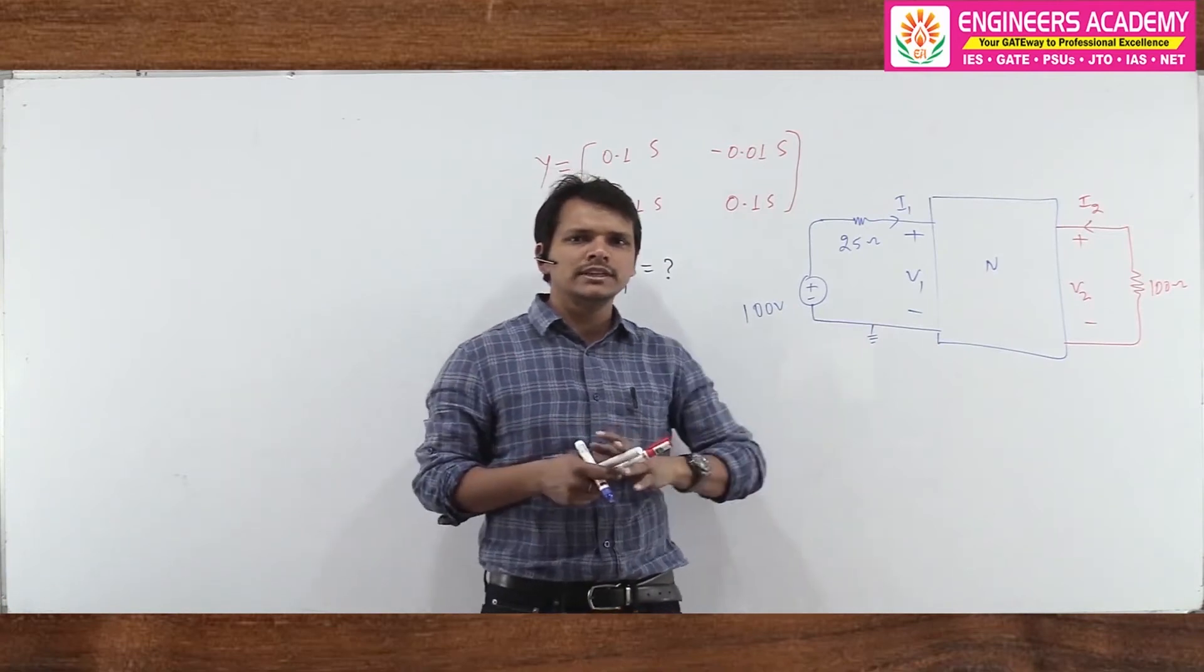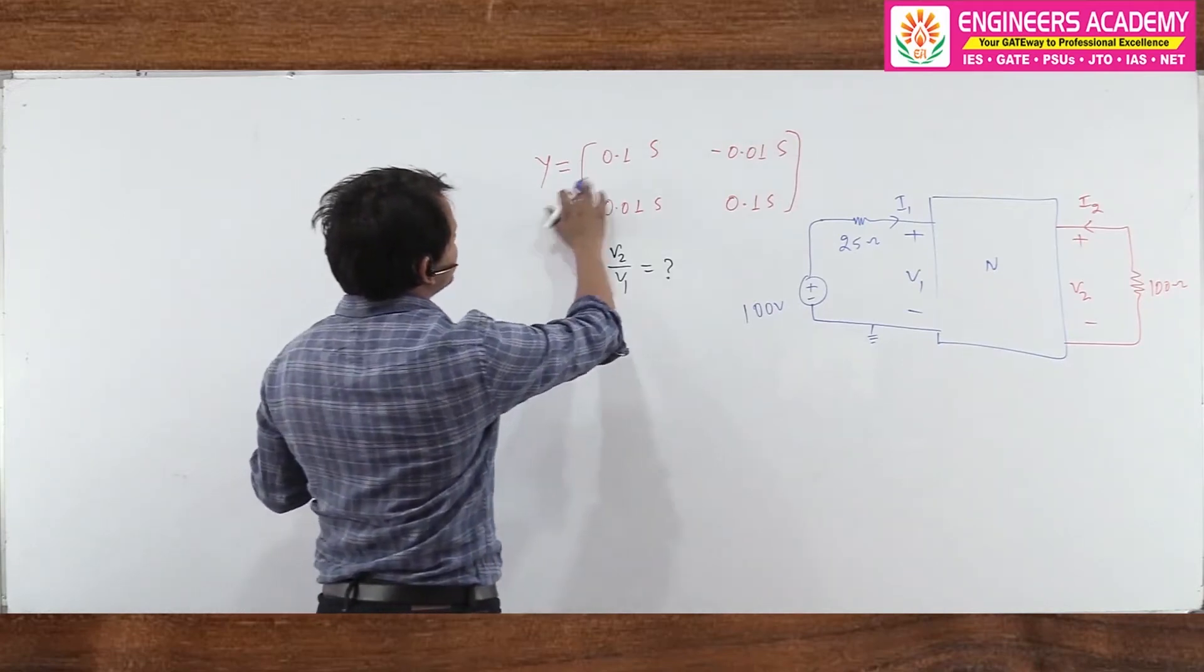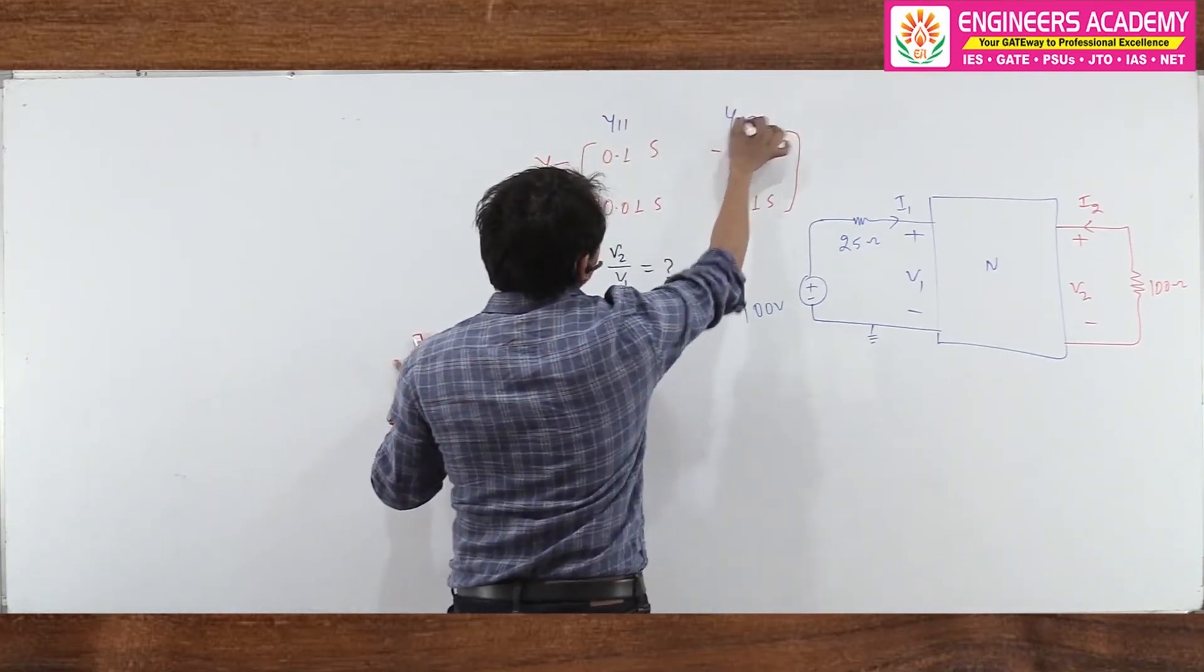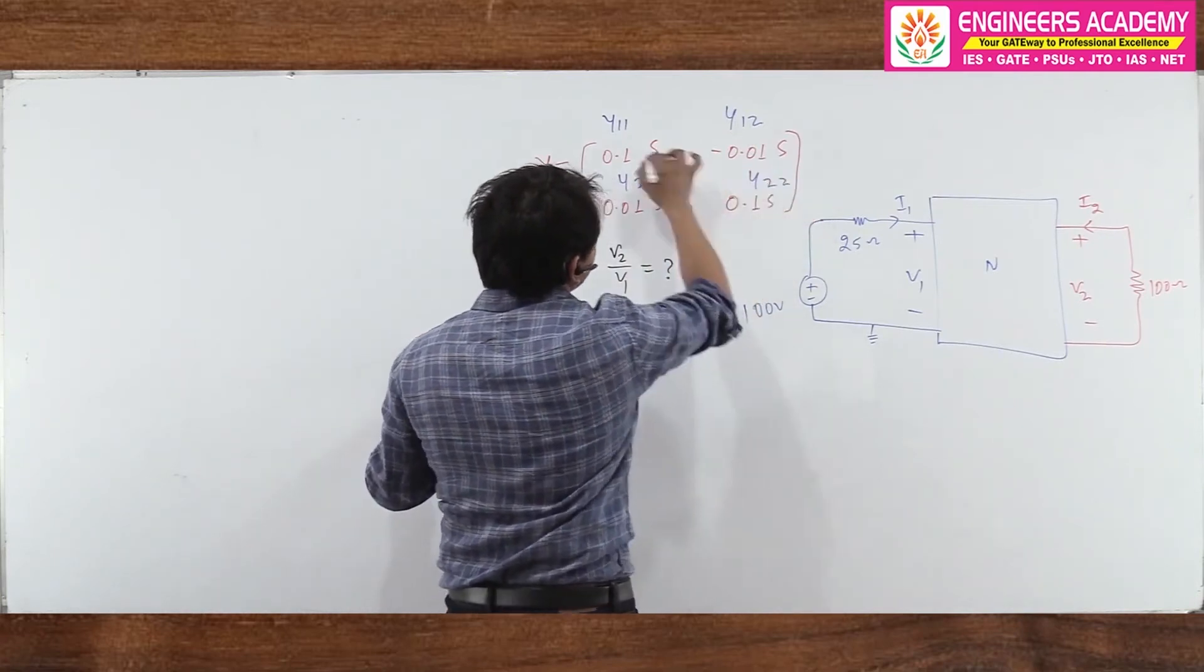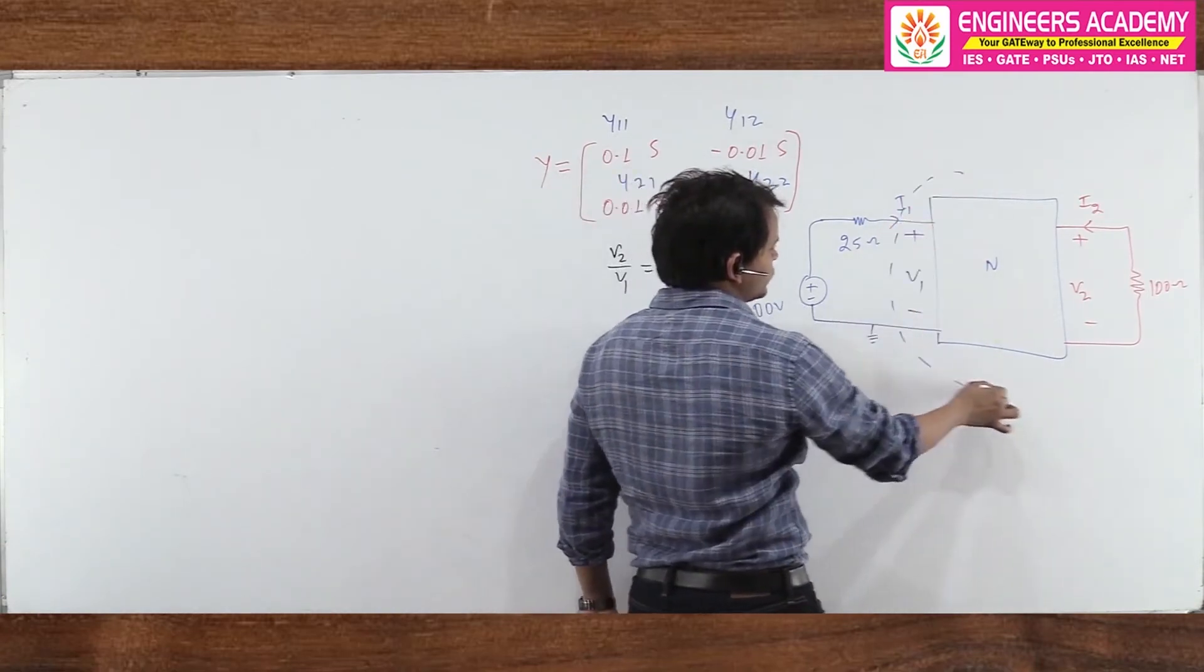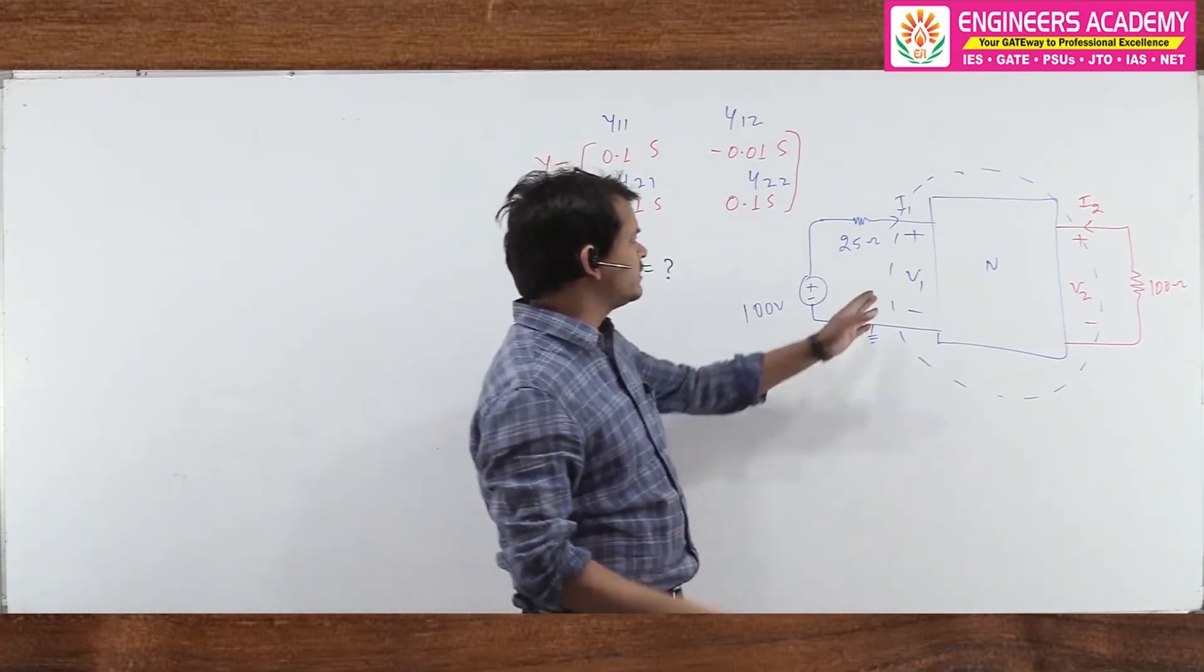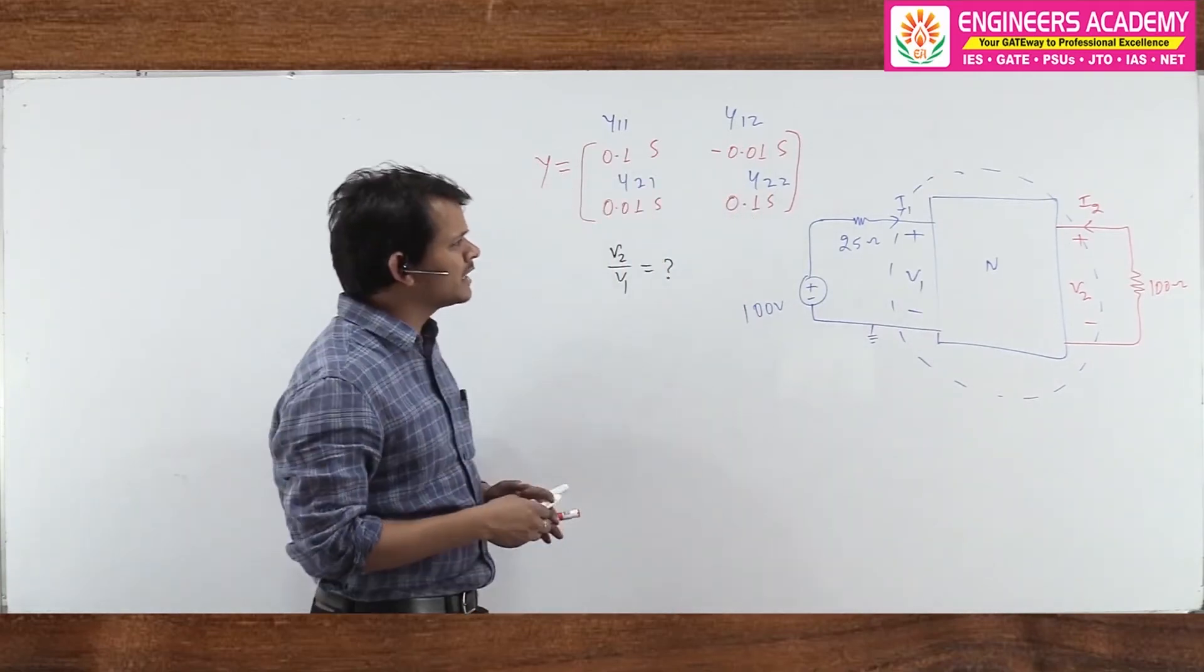If we can comfortably write equations first, why do we go for circuit drawing? So generally we avoid this method and always put the direct equation. Now we see this. If you carefully see, what is the value of Y? Y11 is given as 0.1, this is Y11, this is Y12, this is Y21, and this is Y22. These values are given. Now I ask you, with the help of these Y parameters, what can you do in terms of V1, I1, V2, I2?